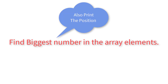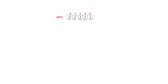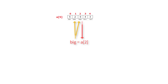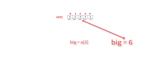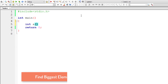Let's write a C program to find the biggest number in an array. We start by assuming that the first number in the array is the biggest, so we assign a[0] to big. After that we start comparing it with a[1], a[2], a[3], etc. If there is any number bigger than the value inside big, we swap that number. We continue comparing until the end of the array, which is a[4]. At the end, we print the value inside big, which will have the biggest number.